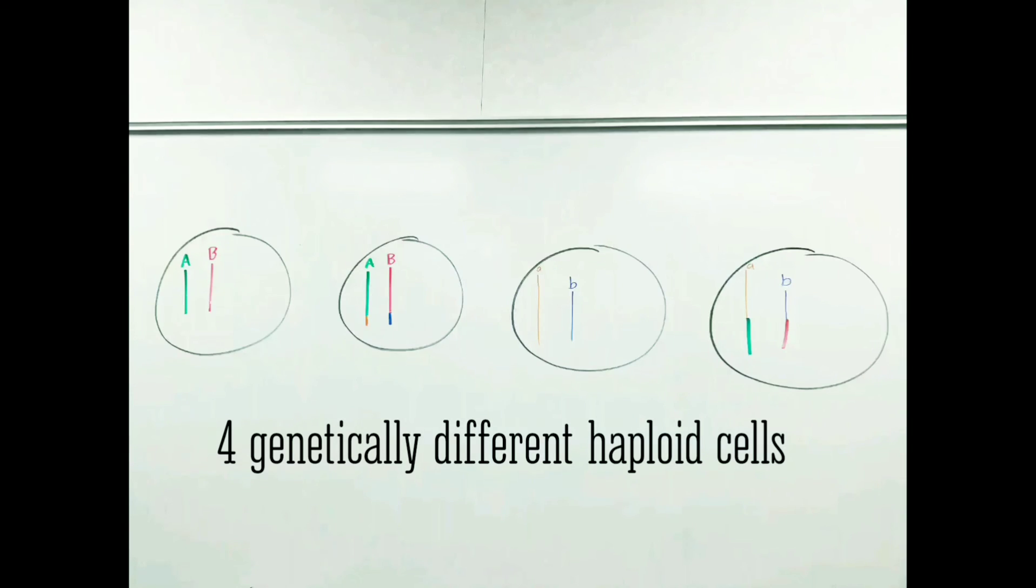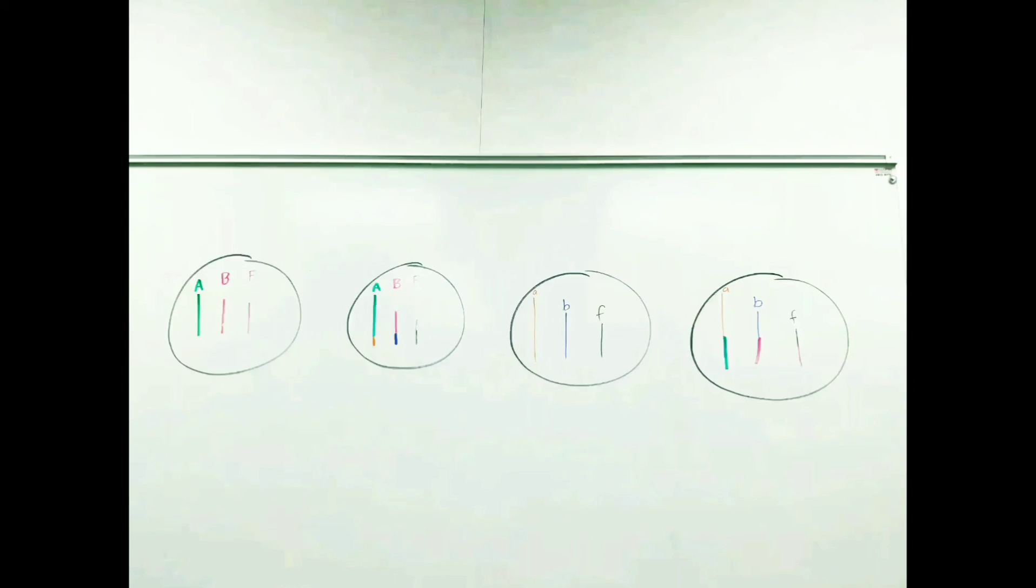The cell will be split, resulting in four genetically different haploid cells, and is now n equals 3.